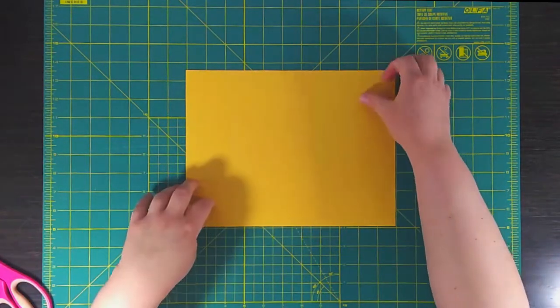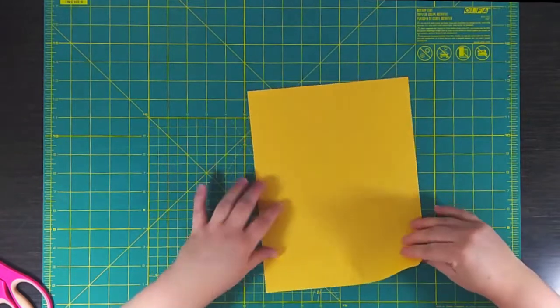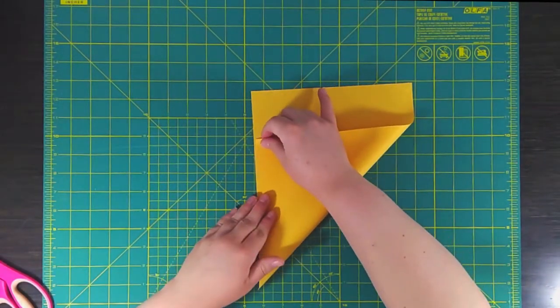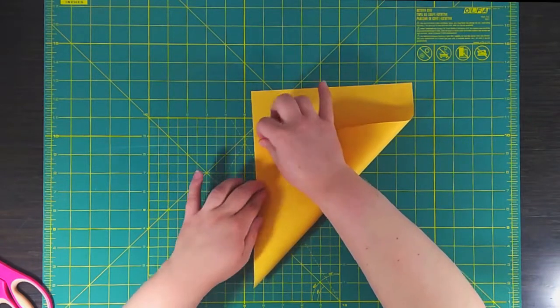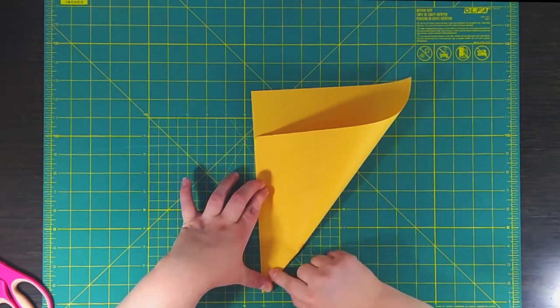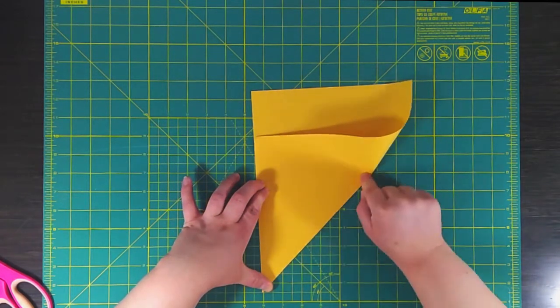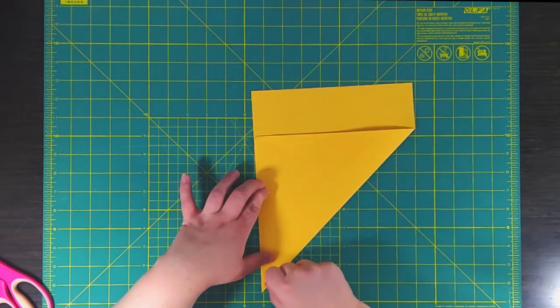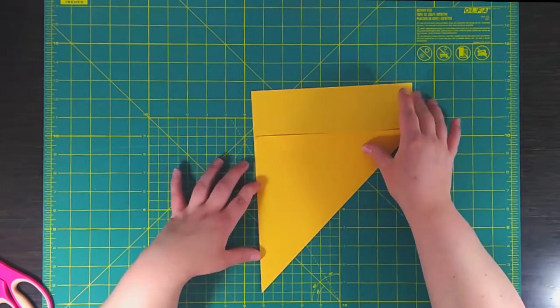The first thing you're going to want to do is make your paper into a perfect square. So the easiest way to do this is to make an eight and a half by eleven into a triangle on one side. Go ahead and use your fingernail to make your creases nice and sharp because this will end up helping you later.